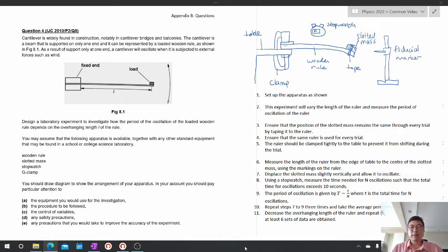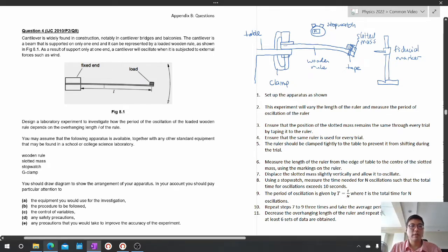Now let's take a look at this experiment. A cantilever is widely found in construction, notably in cantilever bridges and balconies. Basically anything that is hanging out from the support is called a cantilever. It can be represented as a wooden ruler. As a result of being supported only at one end, a cantilever can oscillate when it's subjected to external forces such as wind.